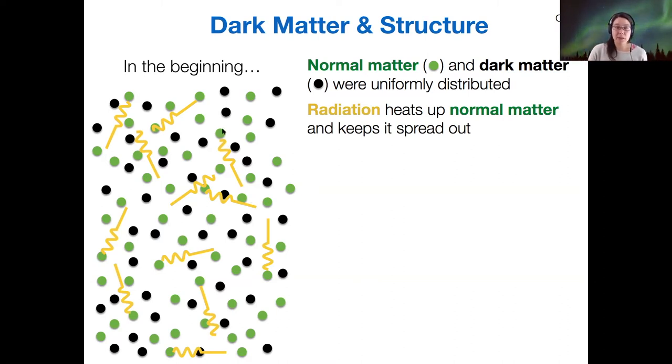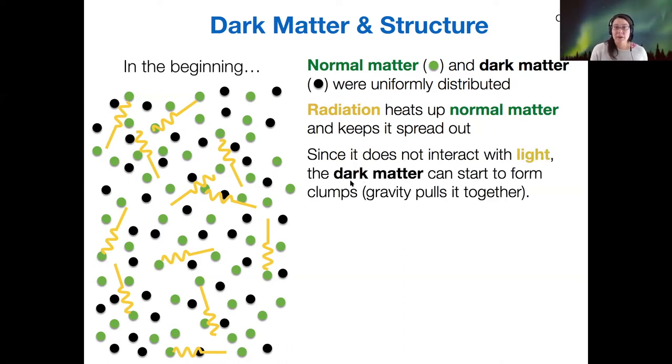So it's because the radiation interacts with normal matter that this process keeps normal matter spread out. But radiation does not interact with the dark matter. And so it doesn't keep the dark matter spread out.